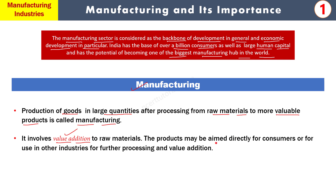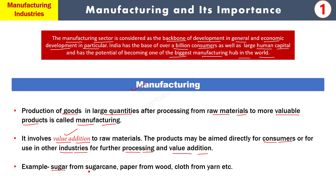Products aimed directly for consumers होते हैं। जो product तैयार हुआ है उसको या तो consumer को directly sell किया जा सकता है, या वो किसी और industry में प्रयोग हो सकता है जहाँ दुबारा process होगा और कोई नया product तैयार होगा। हर different phase of production में value बढ़ती जाती है। उदाहरण के लिए sugar cane - जो primary sector से आता है - raw material है जिसकी कीमत market में कुछ और होगी।